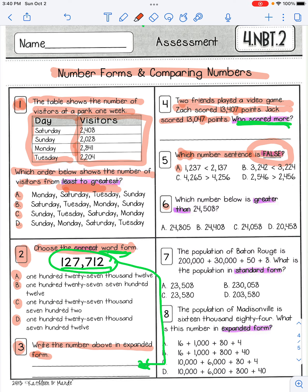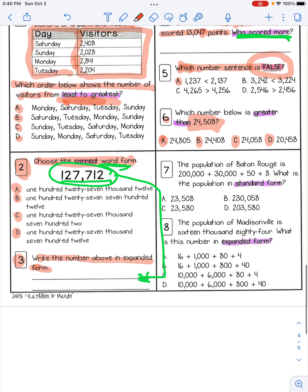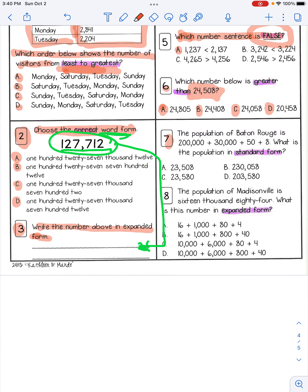Number six. Which number below is greater than 24,508? Is it A, 24,805? B, 24,408? C, 24,058? Or D, 24,458?